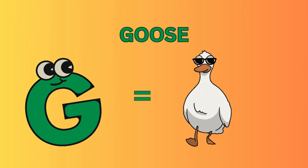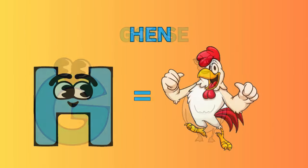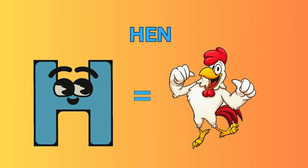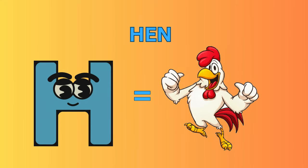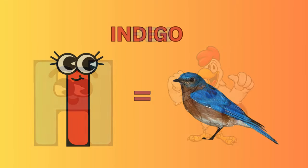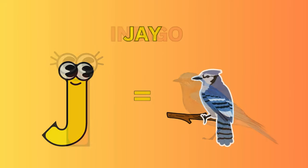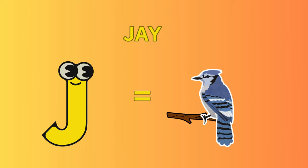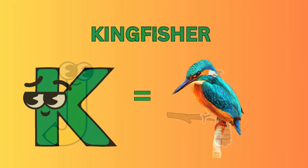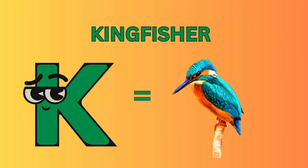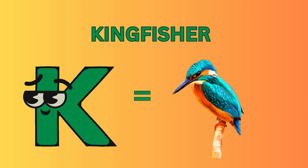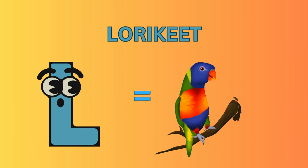G for Goose. H for Hen. I for Indigo. J for Jay. K for Kingfisher. L for Lorikeet.